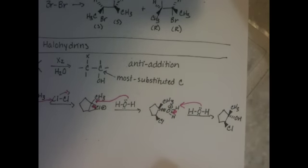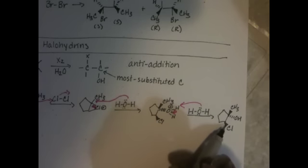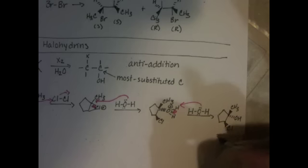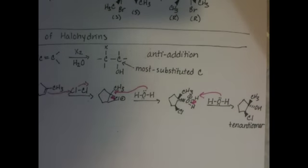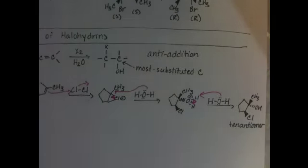And it's going to have an isomer where the Cl is on the wedge, excuse me, the dash, the OH is a wedge, the CH3 is a dash. So drawing that out, we'll just say the enantiomer is also made as well.